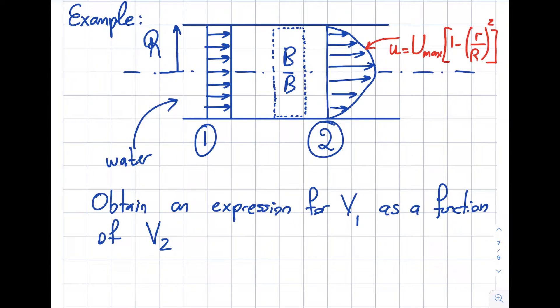I'm going to solve another question from the conservation of mass. There's a question where it includes a non-uniform velocity profile.